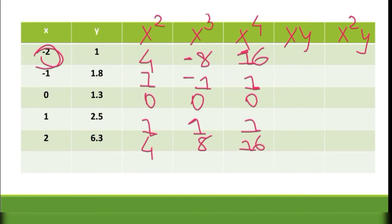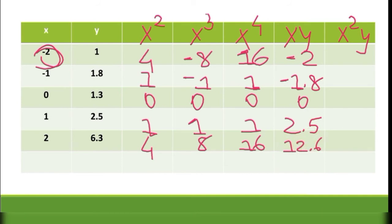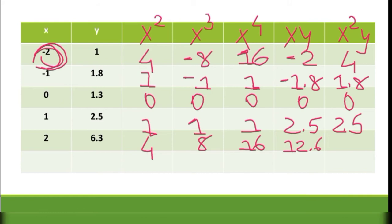Multiplying x into y to get xy values: (−2)(1) = −2, (−1)(1.8) = −1.8, 0, 2.5, and 12.6. For x²y: 4×1 = 4, 1×1.8 = 1.8, 0, 2.5, and 4×6.3 = 25.2.